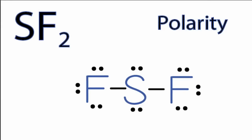To determine whether SF2 is polar or nonpolar, we'll first look at the Lewis structure. We can see we have those two fluorines on either side of the sulfur, but we also have these two pairs of lone pair electrons, and they figure into the geometry of the SF2 molecule.